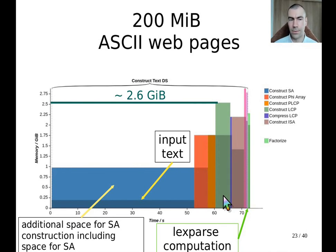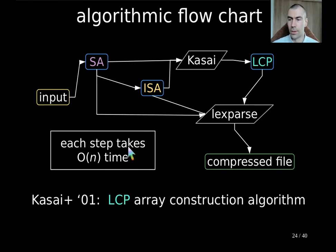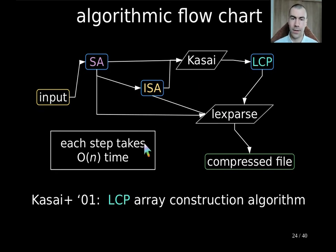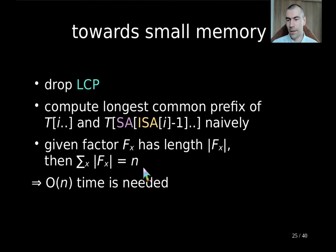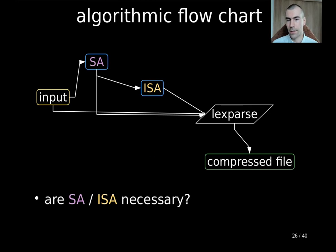Looking at a more abstract flowchart, we see that we first take the input, compute the suffix array, its inverse, then run Kasai's algorithm which computes the LCP array. Then together with these three arrays, we run LexParse to compute the compressed file, where each step takes linear time. Our first reduction is that we can drop the LCP array just by computing the factor lengths naively. We can do that because we sum up all factor lengths to get n, meaning we have order of n character comparisons, so we're still in linear time. So the flowchart simplifies: there is no LCP array left.